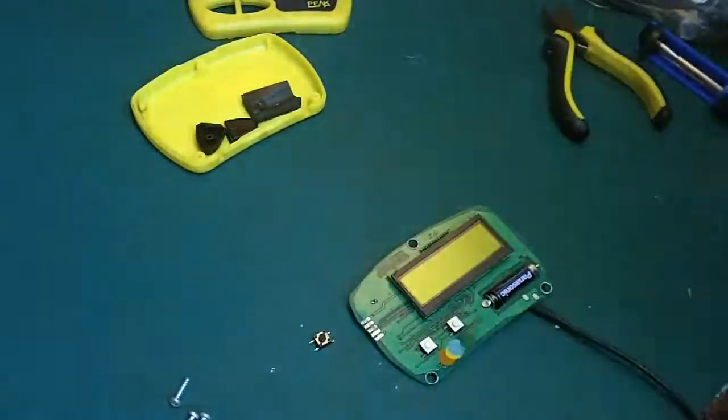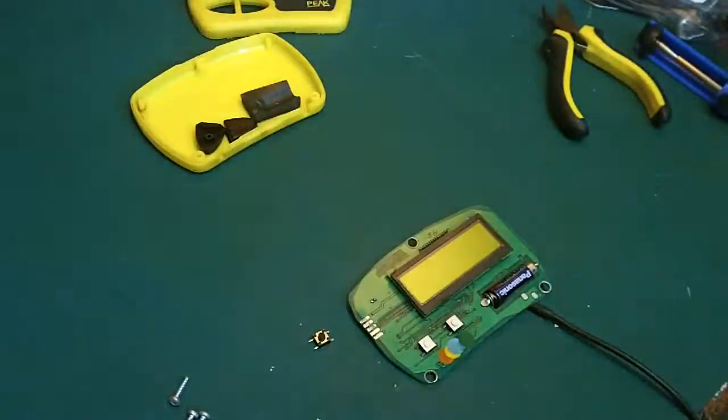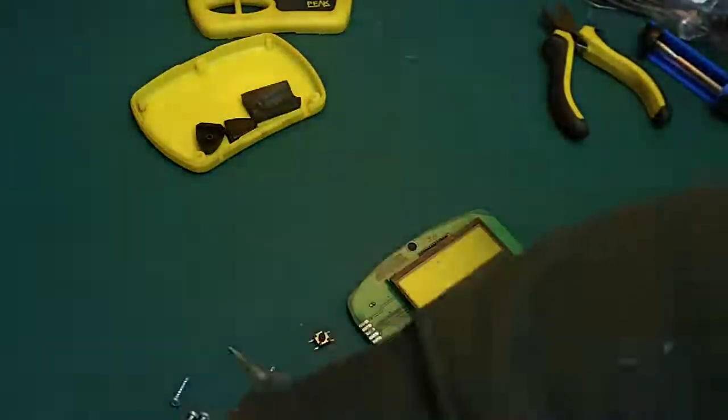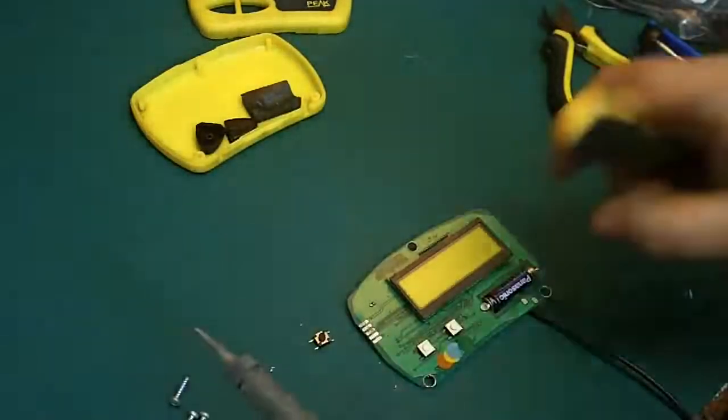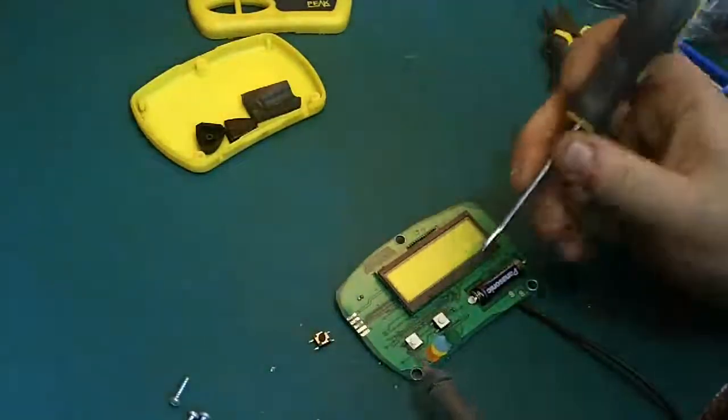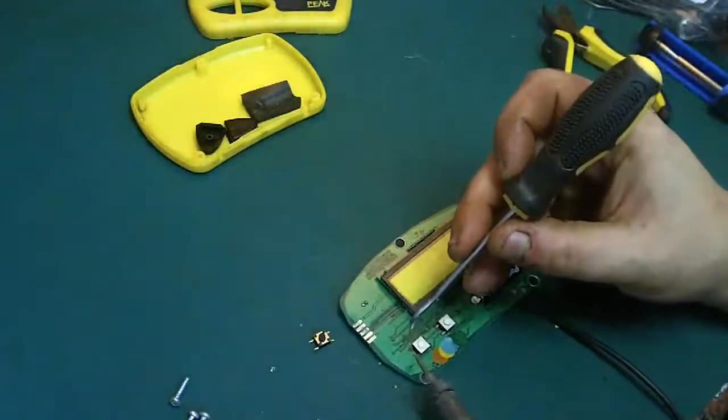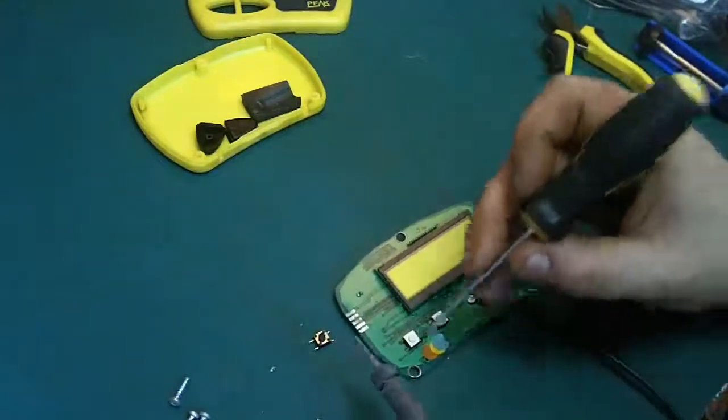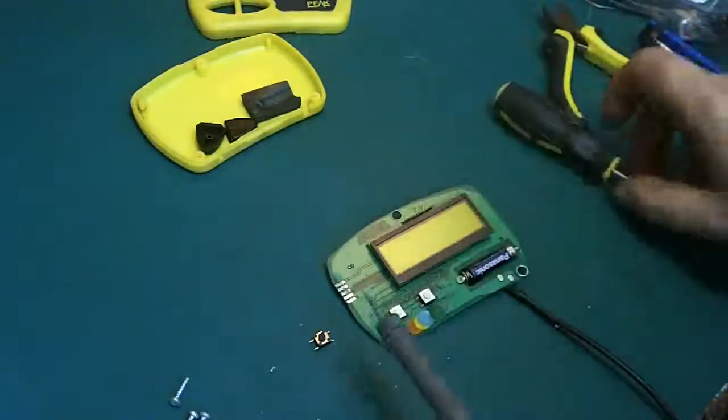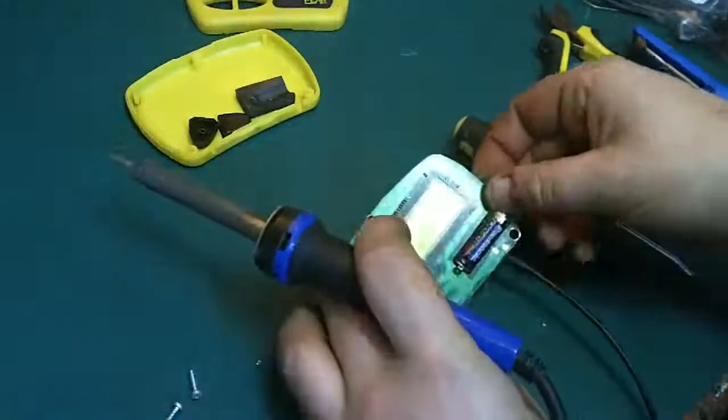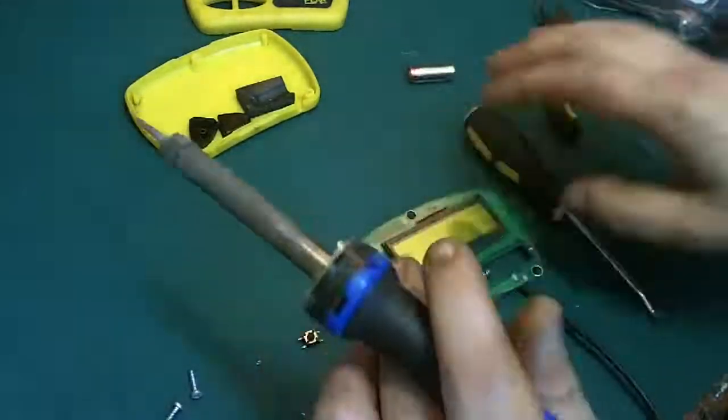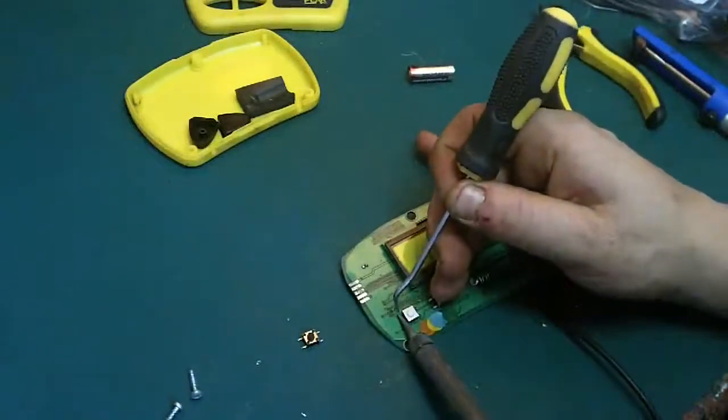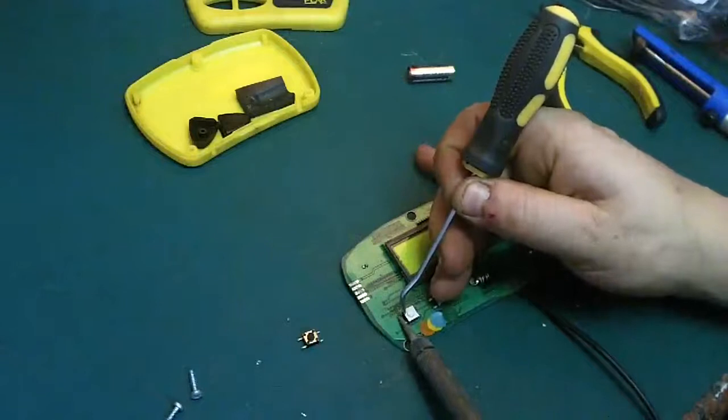And we will get the old switch off here. Now we could use hot air to do this, but we can just do it if we're careful with the old soldering iron. And what we will do is basically we'll heat the two legs up on this side together, when they're both molten we'll lift it up, and then we'll move on to the other side. So what we will do, I'll just take the battery out - I mean it's not going to blow up or anything, but it's just good practice.